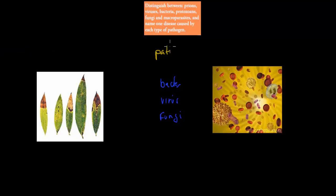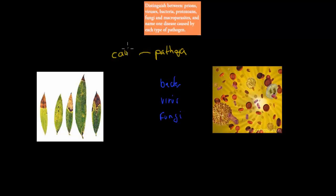A pathogen was anything that caused disease. So here for example you see leaves, and you can see they have some sort of disease. That was a pathogen which caused a disease. So pathogen causes disease.